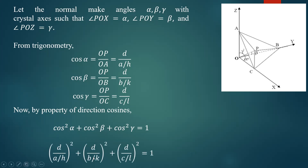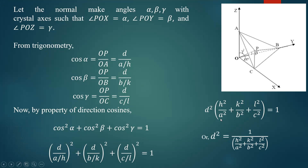Substituting for cos α, cos β, and cos γ, we get: (D/(a/H))² + (D/(b/K))² + (D/(c/L))² = 1. Taking D² outside, this becomes D² × (H²/a² + K²/b² + L²/c²) = 1. Therefore, the interplanar spacing squared is: D² = 1 / (H²/a² + K²/b² + L²/c²). This is the general expression for interplanar spacing.